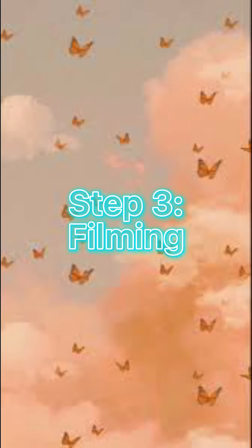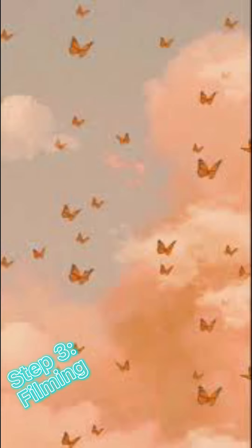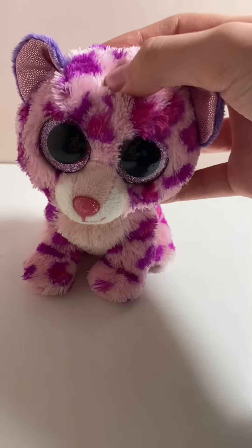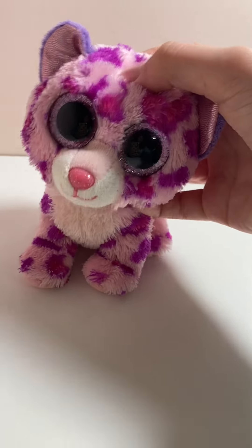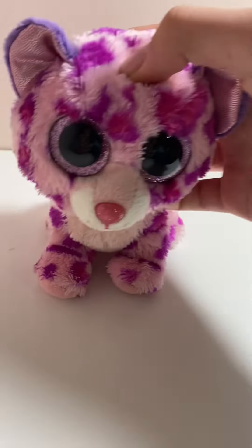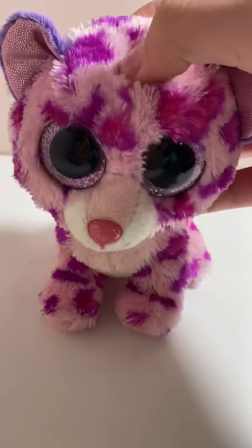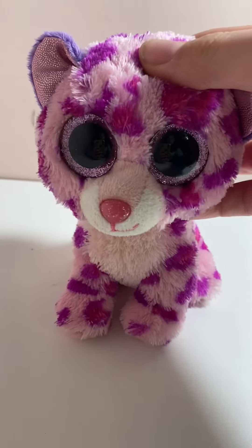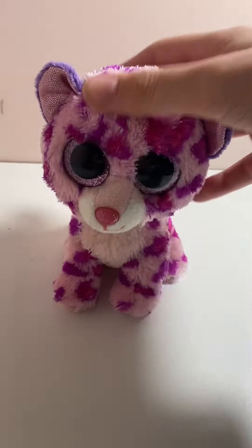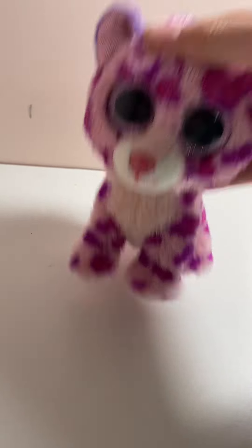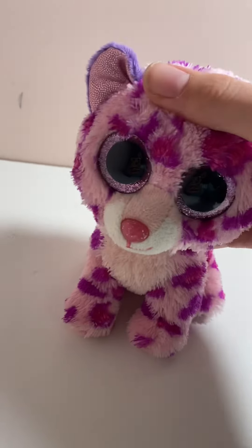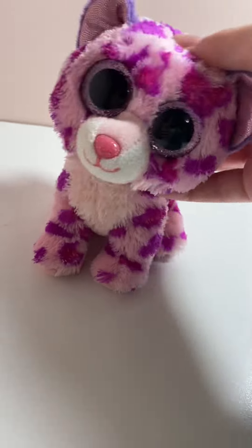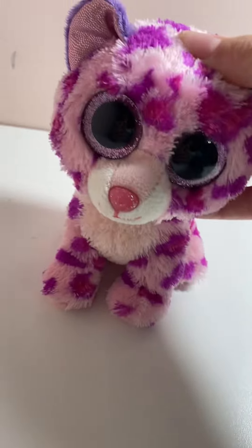Step three: filming. You have your Beanie Boo picked out, you have your song picked out, you have your whole thing set up — now to film. There are going to be a bunch of different scenes that you're going to have to take, so you want to take it one line at a time.